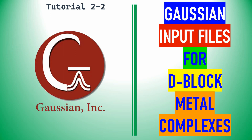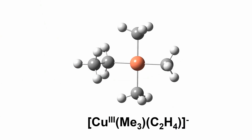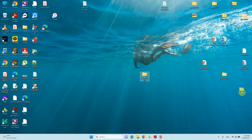This is a tutorial on how to create input files for d-block metal complexes for both Windows and Linux machines. The material is a copper trimethyl monoethyl-substituted copper(III) complex. The overall charge of this complex is minus one, due to the Cu³⁺ oxidation state of copper.